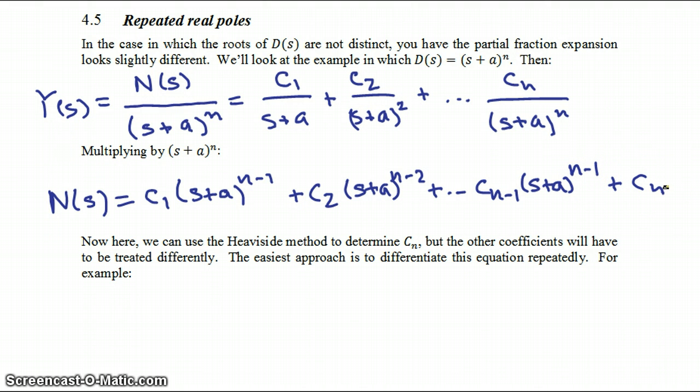Now we can see that all we have to do is substitute s equals minus a into this equation to determine what the coefficient cn is. But the other coefficients will have to be treated differently. So the easiest way to do this is just to differentiate this function repeatedly.